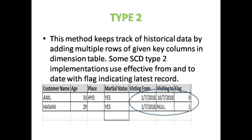If we enter Bangalore as the new place, the start date and end date will be changed - for example, to 1/8/2008 as the new creating date. Based on visiting from and visiting to dates, the data is identified as old or new. The flag works the same way: 0 indicates old data, 1 indicates current data. This is Type 2.